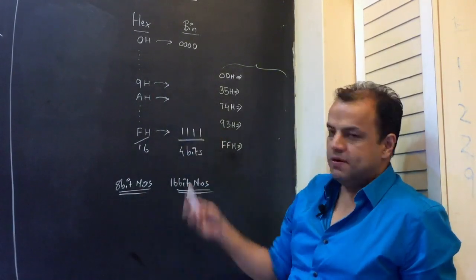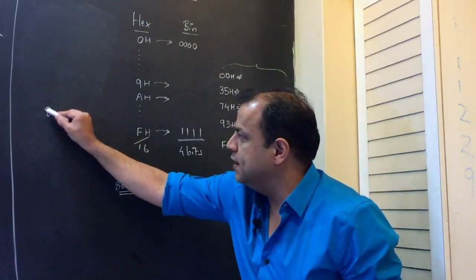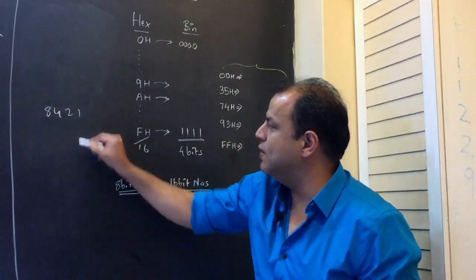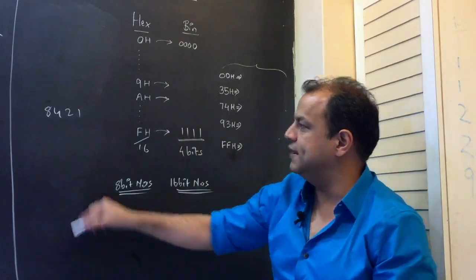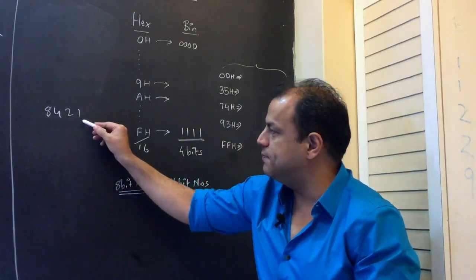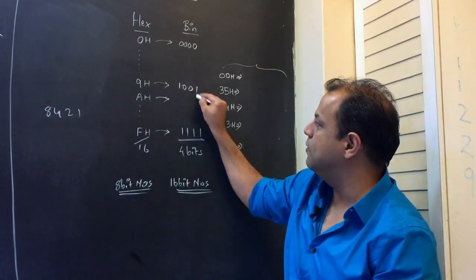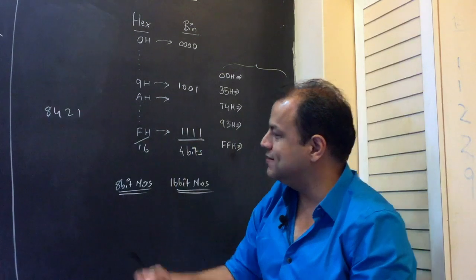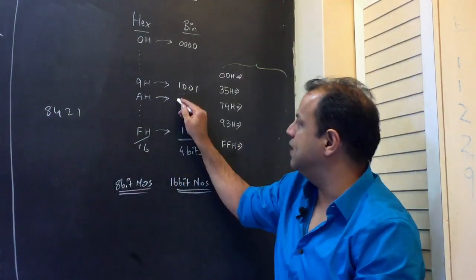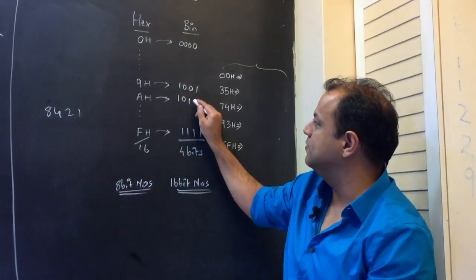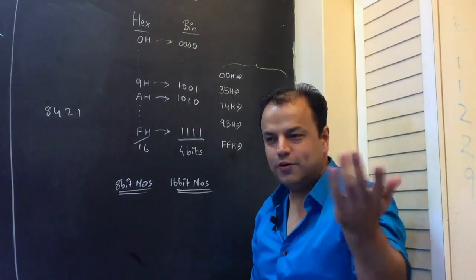This conversion should be very fast. I give you the trick: 8, 4, 2, 1. Suppose I ask you what is 9 — 9 is 8 plus 1, that will give you 1001. A is 10 — 10 means 8 plus 2, that will be 1010.